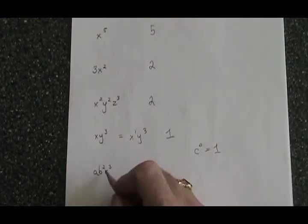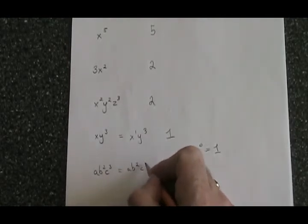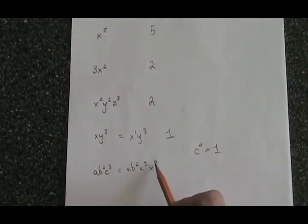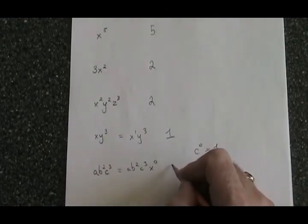Therefore, ab squared c cubed could be written if we want ab squared c cubed x to the 0. x to the 0 is equal to 1, so by multiplying the monomial by 1, I am not really changing it. And that means the exponent of x in this case is 0.